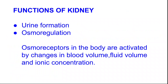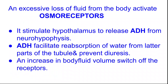Now let's discuss the mechanism to regulate kidney functions. An excessive loss of fluid from the body activates these osmoreceptors. These osmoreceptors stimulate the hypothalamus to release ADH — antidiuretic hormone — from the neurohypophysis. ADH is also known as vasopressin; it is produced by the hypothalamus and stored in the posterior lobe of the pituitary, known as the neurohypophysis, from where it is released. ADH facilitates the reabsorption of water from the distal convoluted tubule of the kidneys.